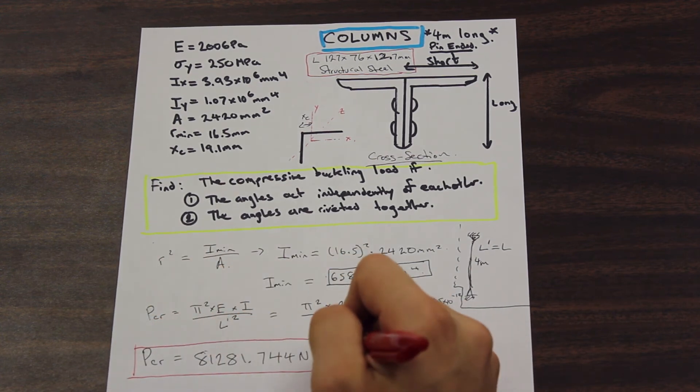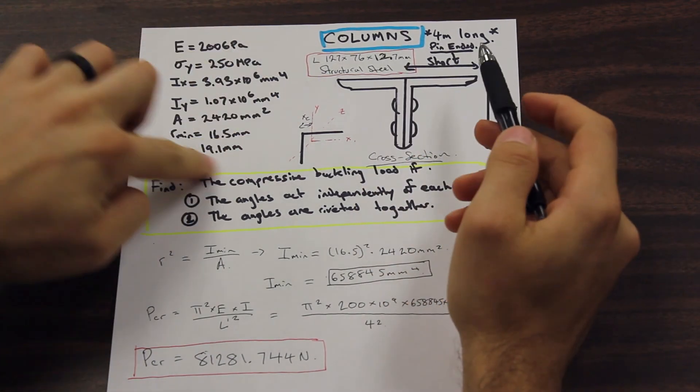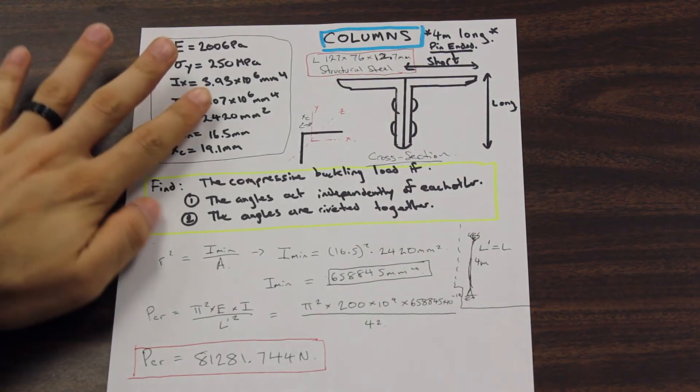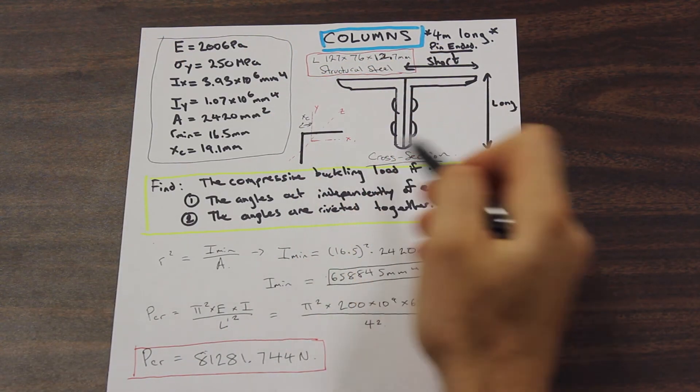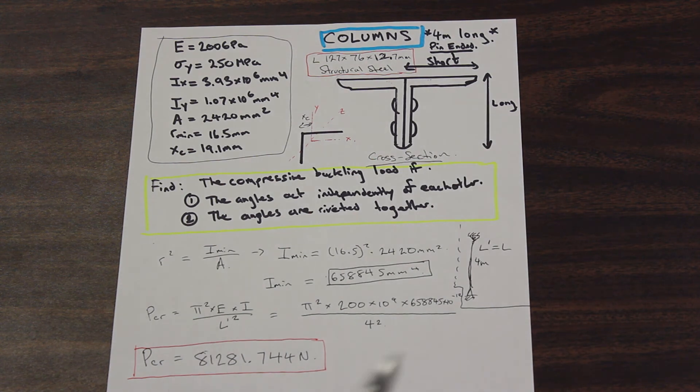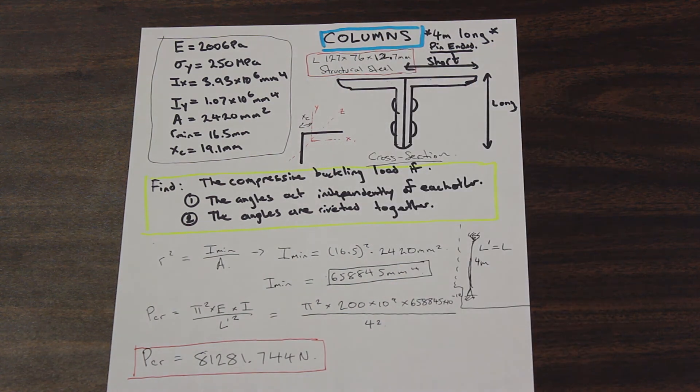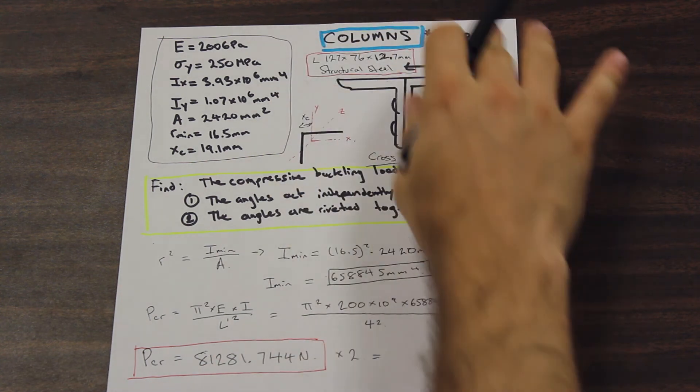So we've arrived at the critical buckling load. Now, that is just the critical buckling load for a single angle. Because we used the data that's given for us here. This data here in this table, I'll just give that a box so we can see, is the data for a single angle. And this is what is actually given in the table, this little cross section here. But what we have is we have two angles, working independently of each other, but as a system. And we want to measure our column, which is two independent angles. So we've found the critical buckling load for a single angle. What we need to do now is just go ahead and multiply that by two.